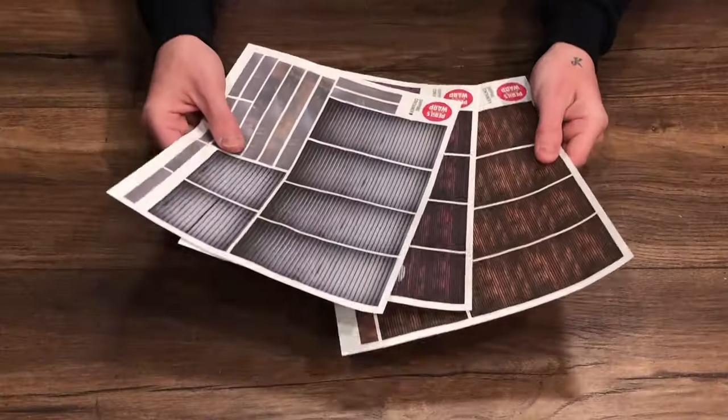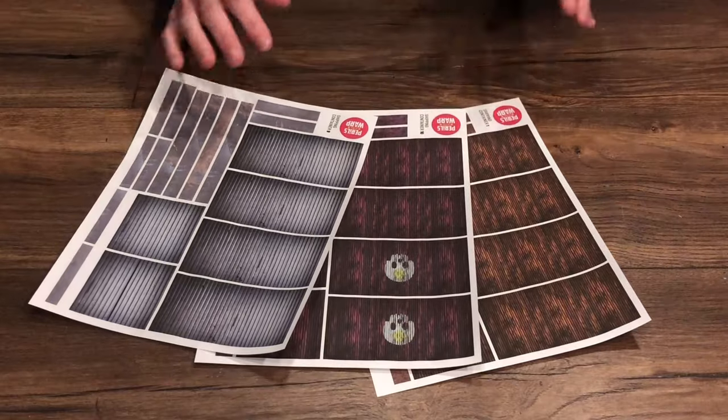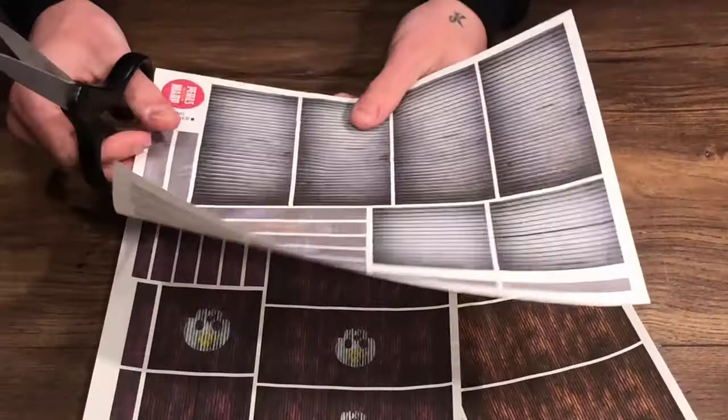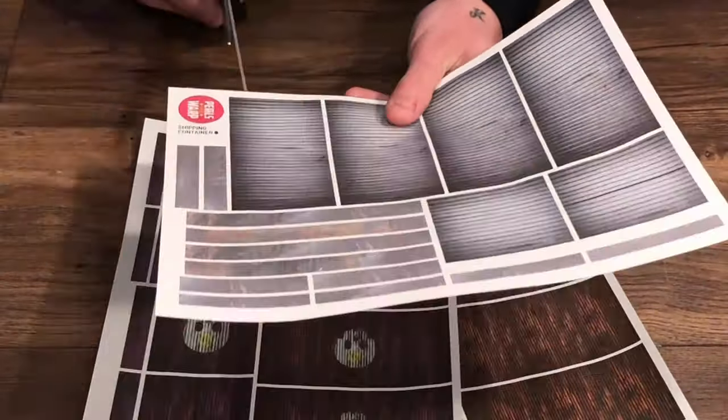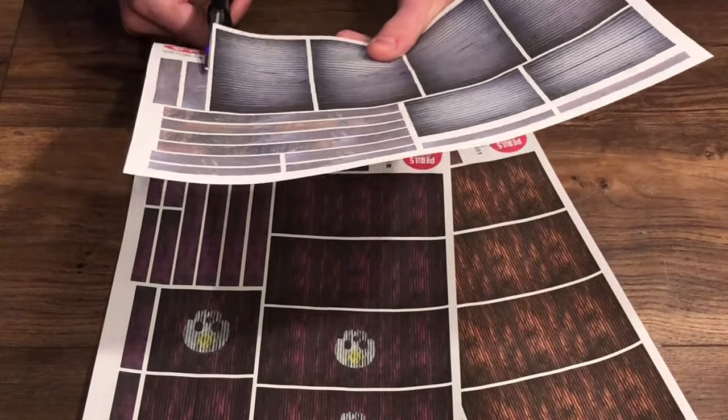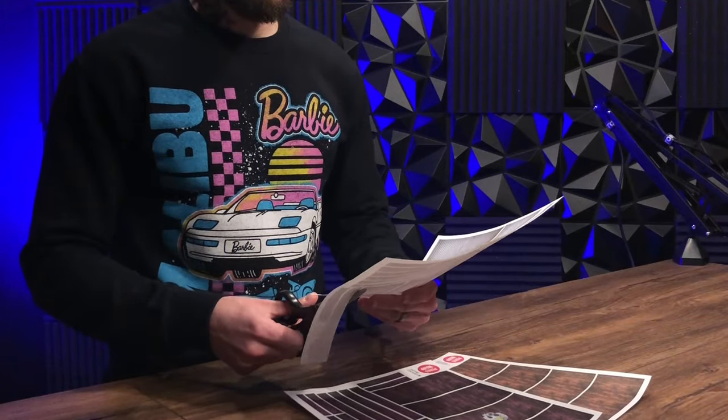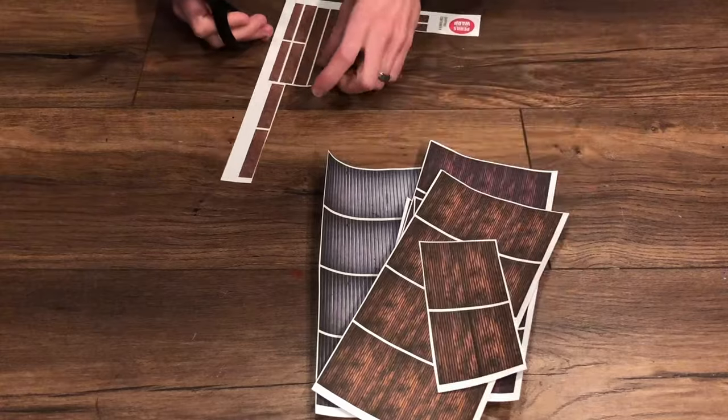So the first thing we're going to do here is print the templates out and then once we have those I'm going to go ahead and cut out the six sides of the container and separate them from the other graphics on the template. Once we have those ready to go I'm going to go ahead and pull out my poster board and start gluing these down.